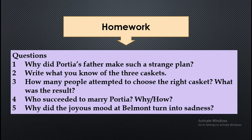That's all for the text. Dear students, that's your homework — go through the text again and answer the following questions. One: Why did Portia's father make such a strange plan? Two: Write what you know of the three caskets. Three: How many people attempted to choose the right casket, and what was the result? Four: Who succeeded in marrying Portia — why and how? Five: Why did the joyous mood at Belmont turn into sadness?